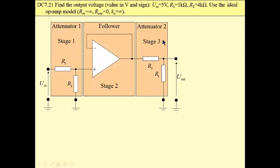Input stage and output stage. Stage number one and number three are attenuators. And we have a follower. Thanks to this follower, we make final gain, a total gain, as a product of the first attenuator gain and second attenuator gain.